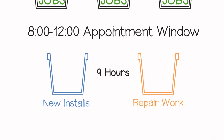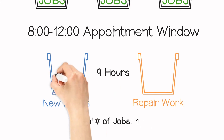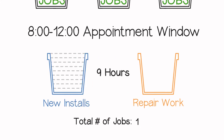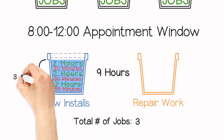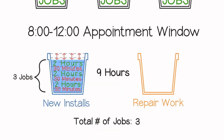The bucket approach takes the average job duration along with the average travel time, and with this information it fills the bucket as customers call. So, if an install takes an average of two hours and the average travel time is 30 minutes, you can put three new installs in the bucket — but that leaves you with one hour and a half of remaining capacity without any job.